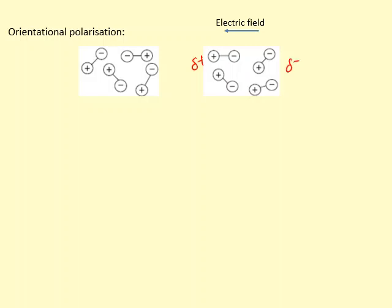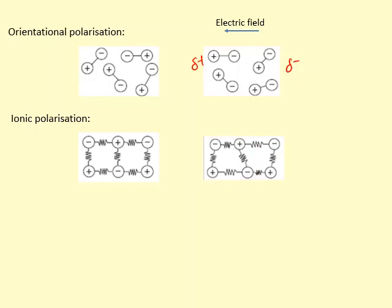Another way is with ionic compounds. So you can see these ionic compounds, when an electric field is applied towards the left, all the positive ions shift towards the left while the negative ions have gone towards the right, making this side partially positive and this side partially negative.